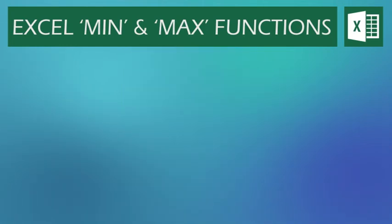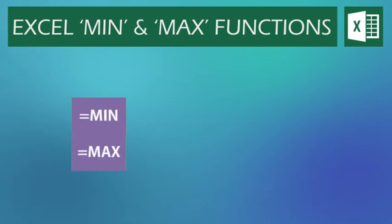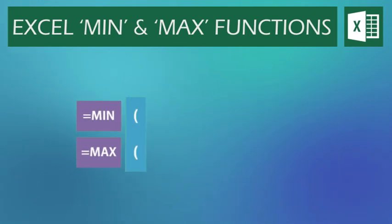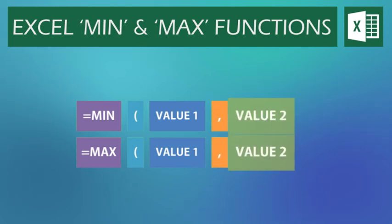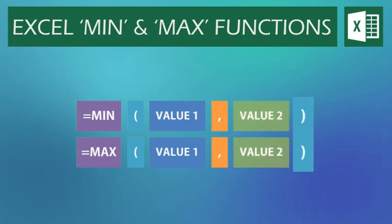To recap, the MIN and MAX functions are constructed in the following way: equals MIN or MAX, open brackets, the first value, comma, the second value, close brackets. Thank you for watching.